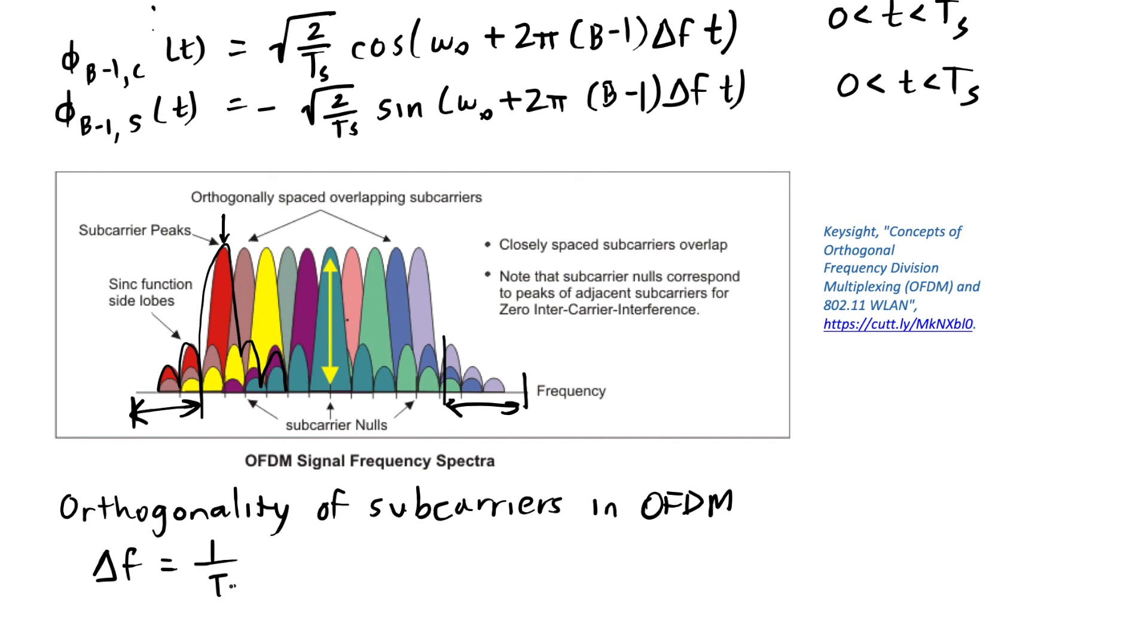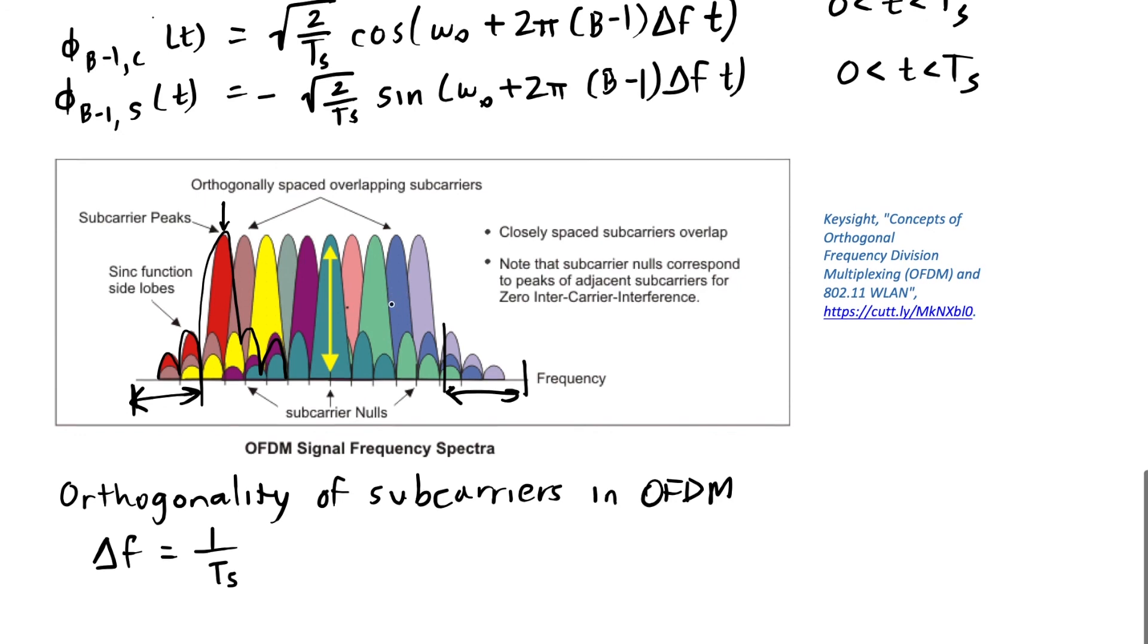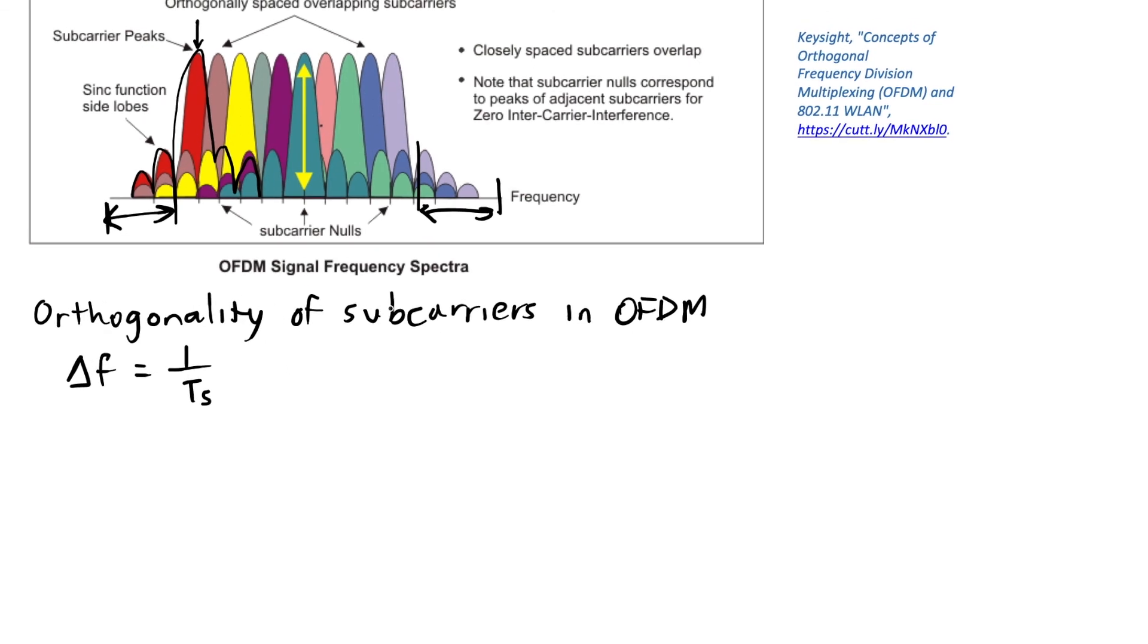It's not 1 over 2 Ts. We've talked about why that is in the case of non-coherent FSK, and you'll do some more with that on your homework 4. Nevertheless, this is a very spectrally efficient signal because we're able to put these signals right next to each other in the frequency domain and send them at the same time and still be able to separate them at the receiver.